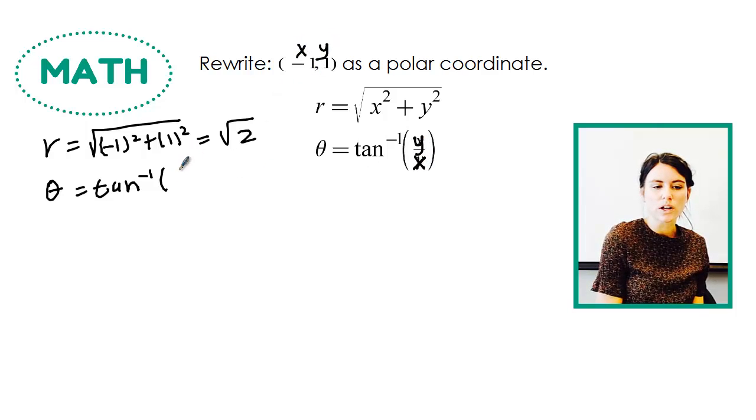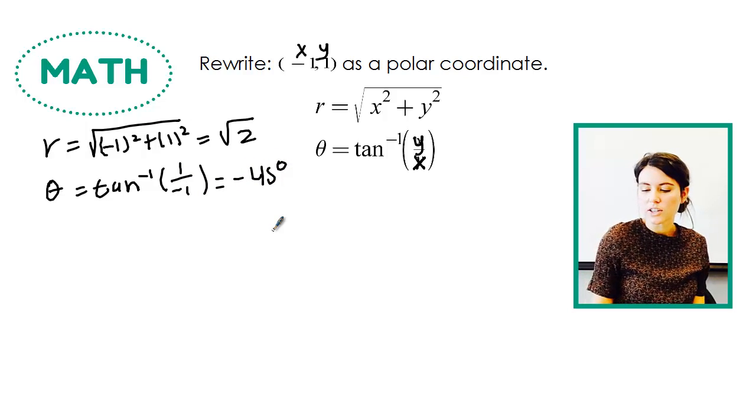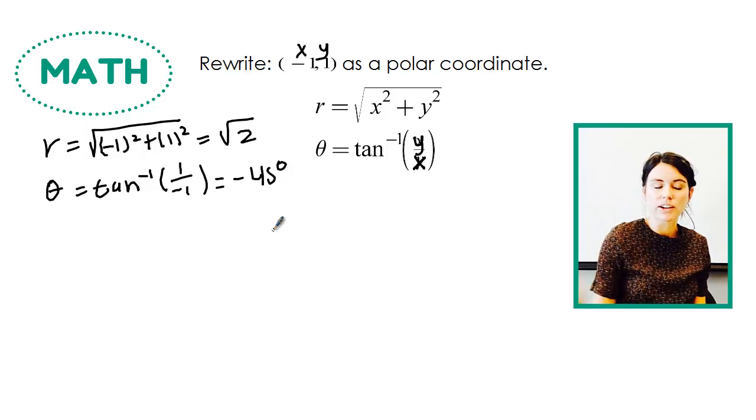Which is 1 over -1, which is going to give us -45 when we plug it in the calculator. So if we do tan inverse of -1, we should get -45 degrees.